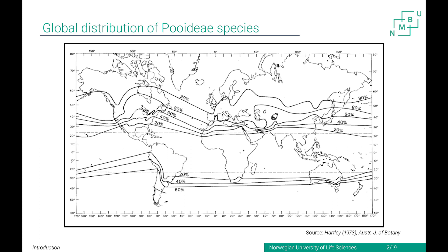As you can judge from the picture, I will focus on cold tolerance today. I always like to start with the overarching motivation for our group to study Poidae species, which is really well visualized on that map here, showing you the percentage of grass species that belong to the Poidae subfamily. Moving from the equator towards the poles, the species that belong to the Poidae subfamily increase. In the temperate and especially cold temperate areas of the world, the Poidae species are the dominant grasses.